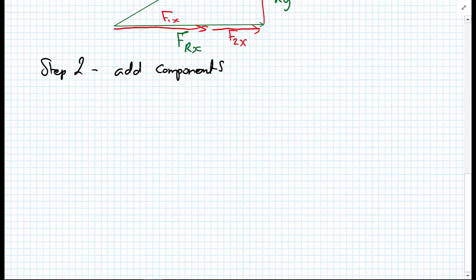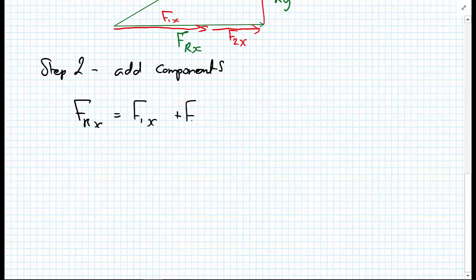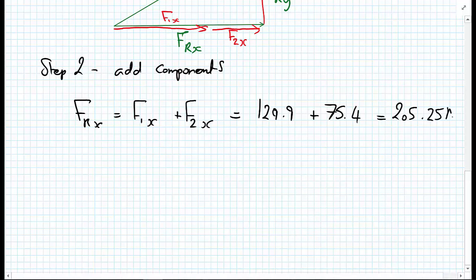FRx equals F1x plus F2x, which equals the 129.9 plus 75.4, which equals 205.25 newtons.